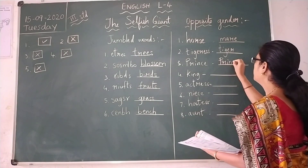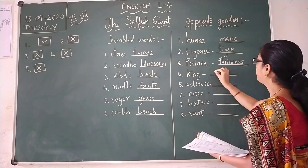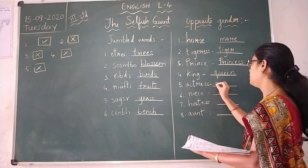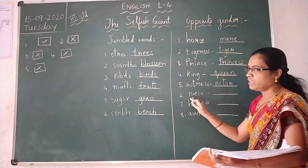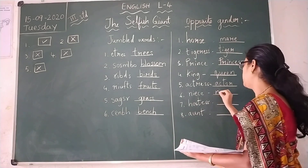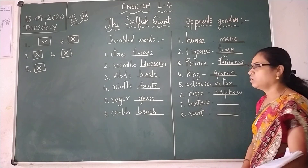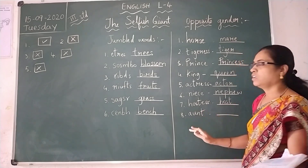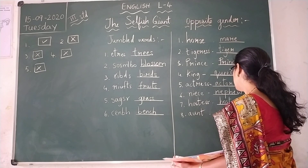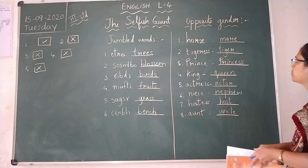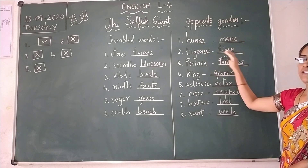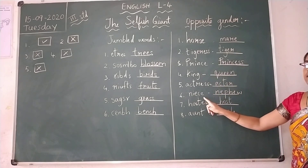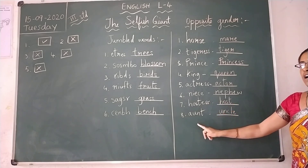Prince — princess. King — queen. Actress — actor, A-C-T-O-R. Niece — nephew, N-E-P-H-E-W. Hostess — host. Aunt — uncle. So write these answers in your textbook.